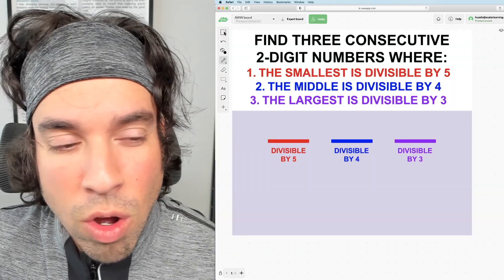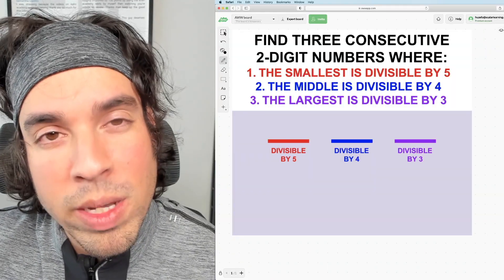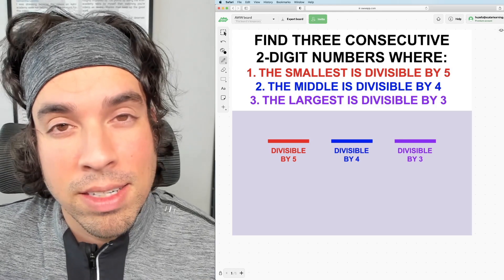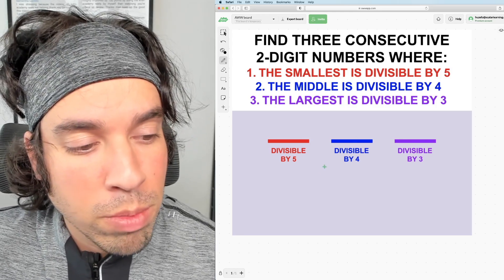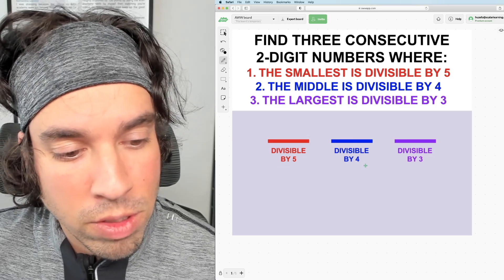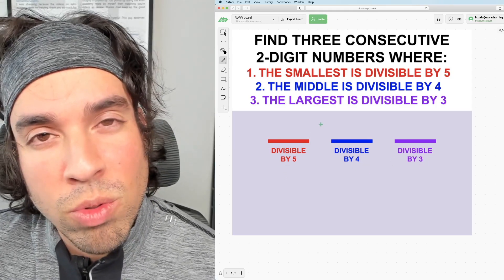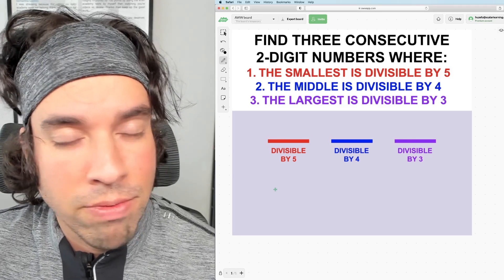So in this one it's all about how do we approach this and we know we got two-digit numbers so we got a limited set of options already. Now since divisible by five has the least amount of options compared to divisible by four and divisible by three, I'm going to use that as my first limiting factor.